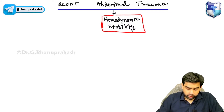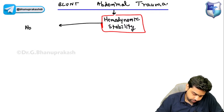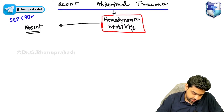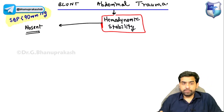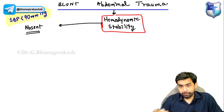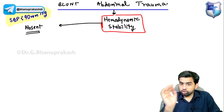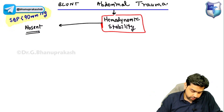If hemodynamic stability is absent — meaning the systolic blood pressure of the patient is less than 90 mmHg — that is when you say the patient is hemodynamically unstable.